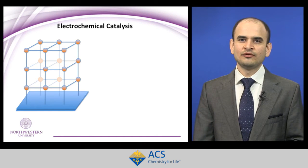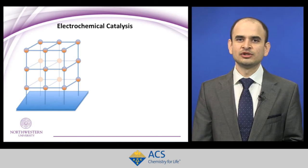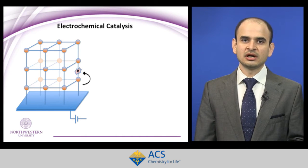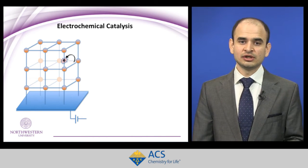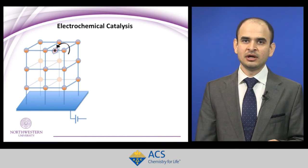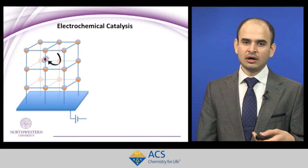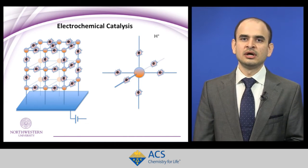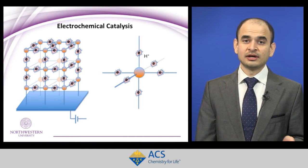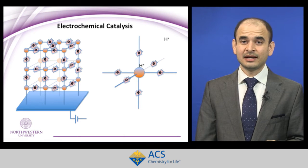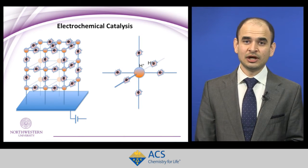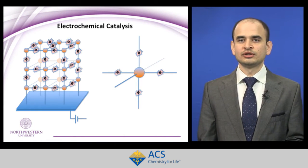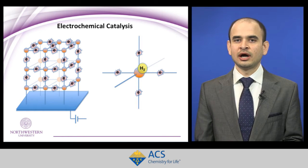Here is an example of how such a device works. We deposit the material on a conductive substrate and apply a potential. In this case, we fill the material's redox-active linkers with electrons, and then at the node, we deposit a catalyst that can consume these electrons and, for instance, convert protons into hydrogen gas.